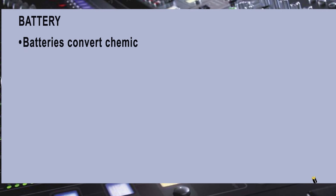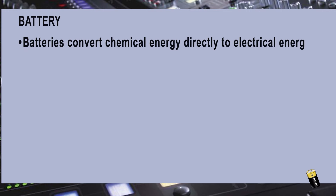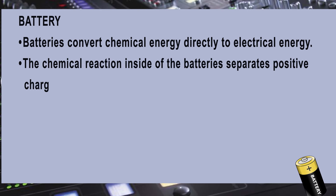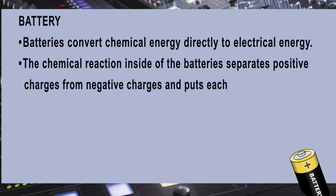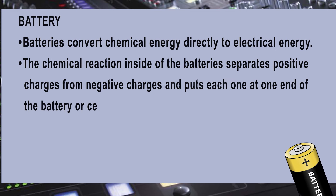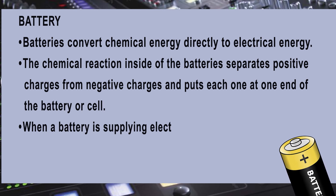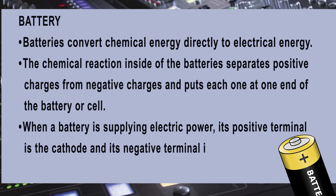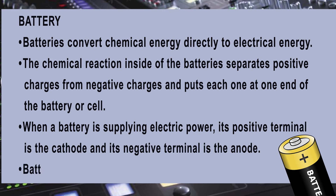Battery. Batteries convert chemical energy directly to electrical energy. The chemical reaction inside the battery separates positive charges from negative charges and puts each one at one end of the battery or cell. When a battery is supplying electric power, its positive terminal is the cathode and its negative terminal is the anode. Batteries and cells are power sources.